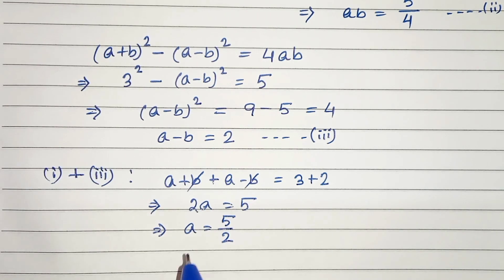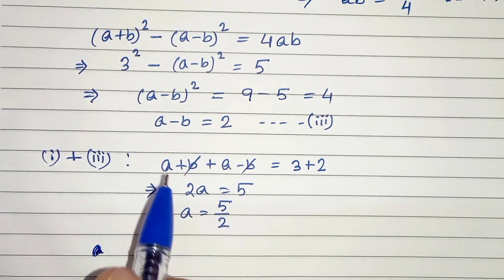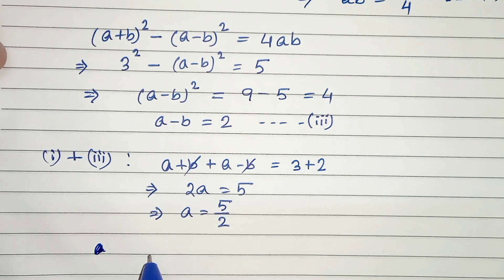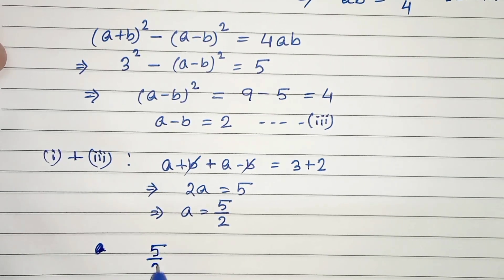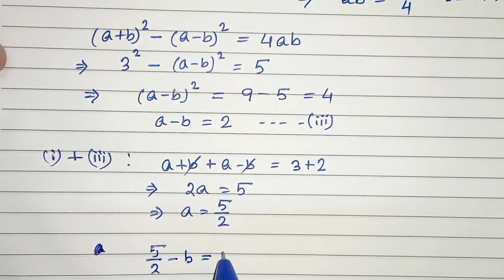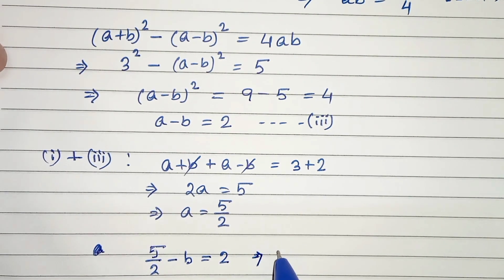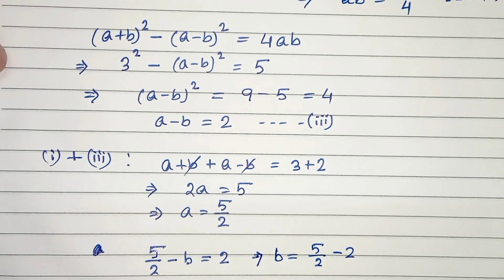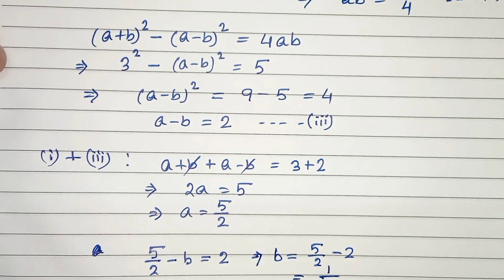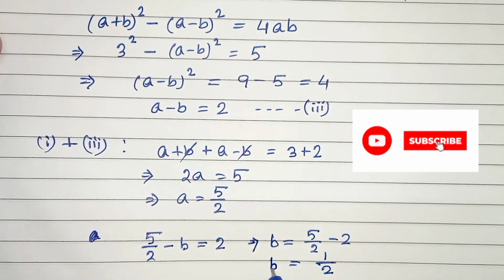Therefore a equals 5 by 2. Now let's put a's value into equation 3: 5 by 2 minus b equals 2. Taking b to the right hand side, b equals 5 by 2 minus 2, which equals 1 by 2. So b equals 1 by 2.